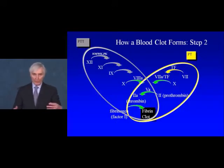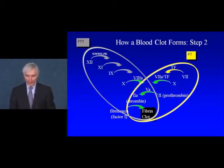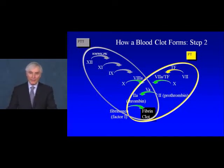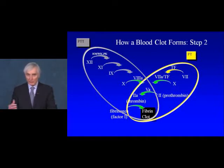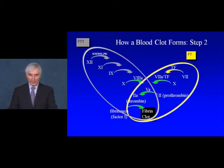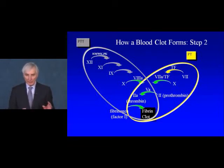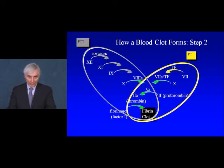Blood clotting is generally considered to occur in two major phases. The so-called extrinsic system, represented by the yellow oval, where factor 7, tissue factor, and the common final pathway factors 5, 2, and 10 all lead to the formation of a fibrin clot. The prothrombin time best characterizes the time it takes for the extrinsic clotting system to activate clotting. In contrast, the intrinsic system on the left side of the slide includes the hemophilioid factors and the final common pathway factors 2, 5, and 10. The partial thromboplastin time measures the intactness of this alternative pathway to fibrin clot generation.